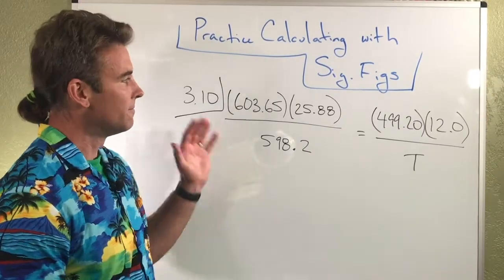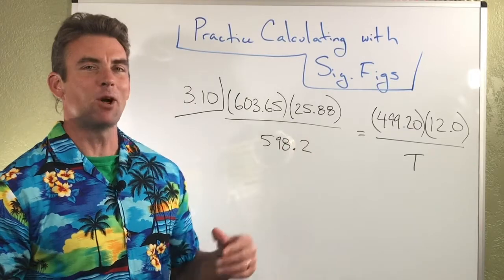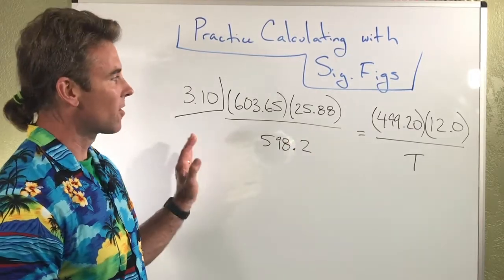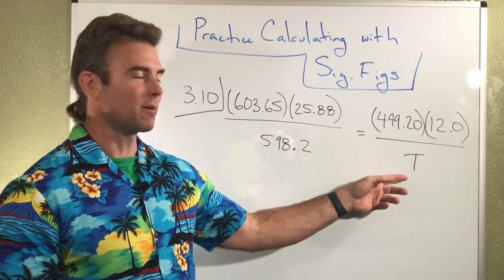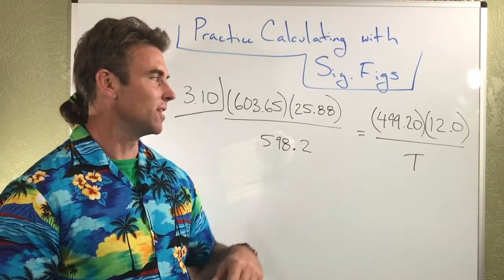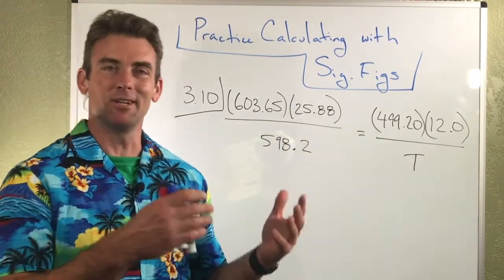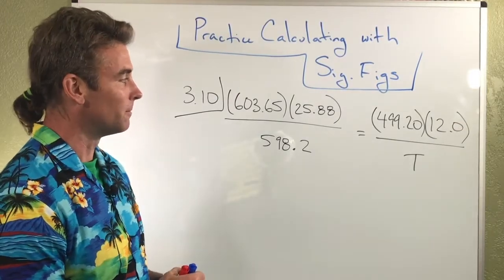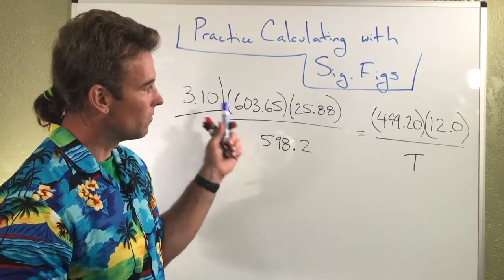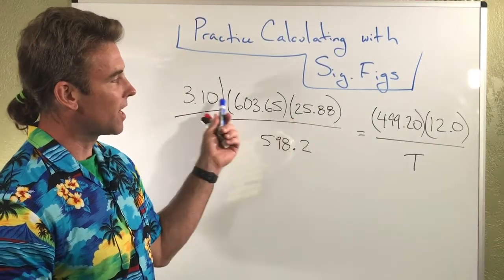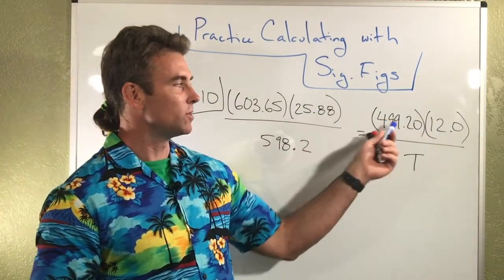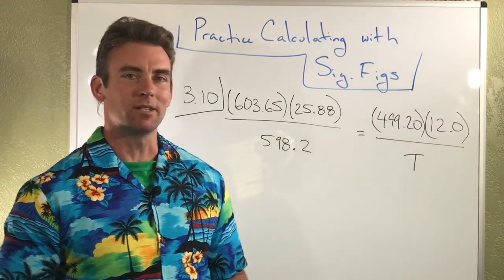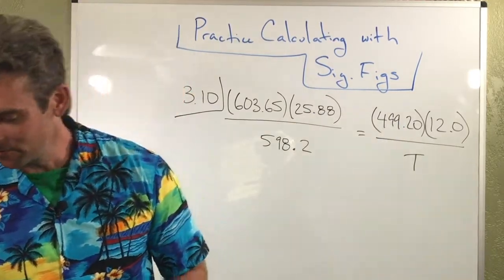All right, this next one is a spicier meatball than the last one. What it's going to require us to do is a whole bunch of calculating and also a little bit of algebraic manipulation. So I'll kind of show you how to do this, both practicing sig figs and also practicing a little bit with algebra. Okay, so the first thing I'm going to do is pretty much what I did last time. I'm just going to multiply these two numbers together and those two numbers together so that I end up with an expression.